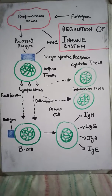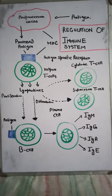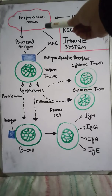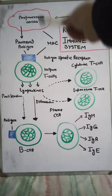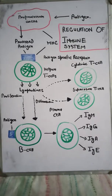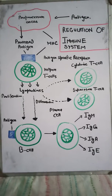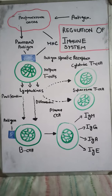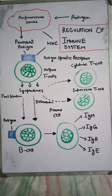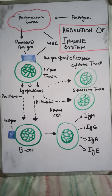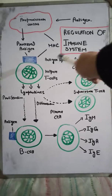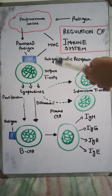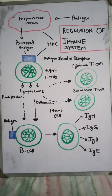The MHC is present on macrophage cells and it presents the antigen to the helper T-cells. The antigen binds to the helper T-cells through the antigen-specific receptor.